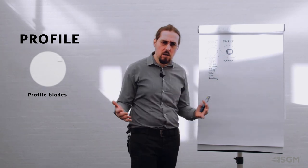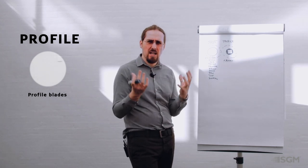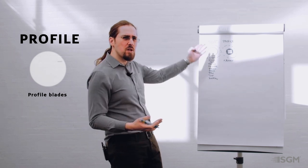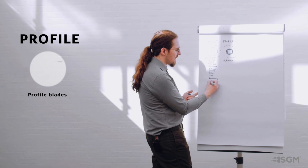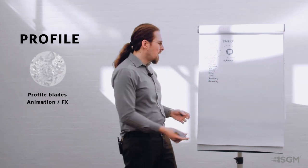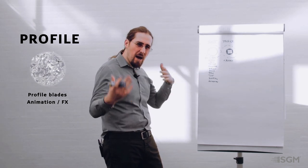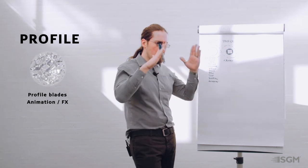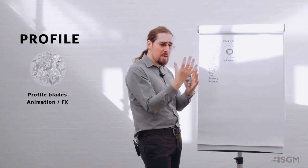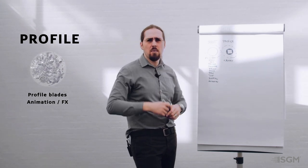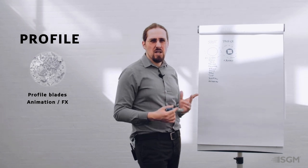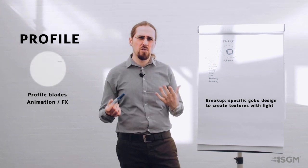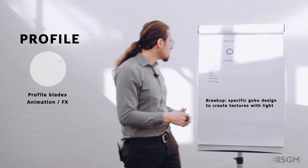The profile tends to be bigger than the spot because more space is needed for the mechanical framing model. Sometimes both the spot and profile come with what we call an animation wheel or effects wheel, depending on the manufacturer. Some manufacturers combine gobos with the animation wheel; some focus on gobos for aerial beam effects; others are more concerned with theatrical effects, offering many breakups and small defined dot patterns for backgrounds.